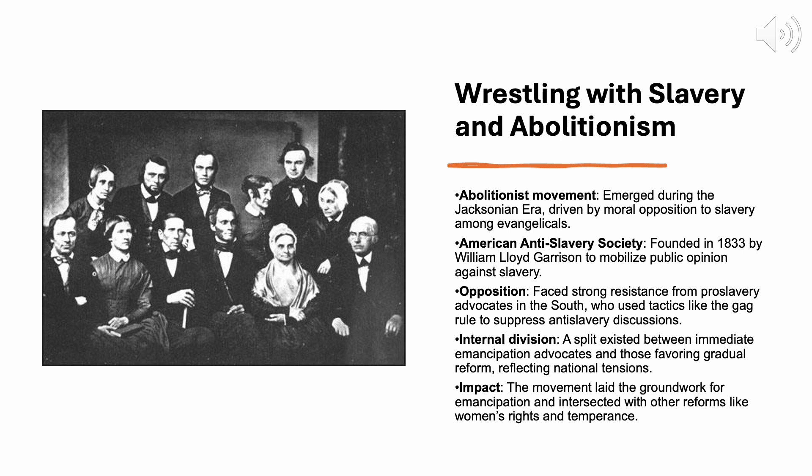The abolitionist movement also faced challenges from within. While some abolitionists, like Garrison, called for immediate emancipation and uncompromising moral reform, others favored a more gradual approach or sought to address the issue of slavery through political compromise. This division within the movement mirrored the broader sectional divide in the United States as the nation grappled with the future of slavery. Despite these challenges, the abolitionist movement made significant strides during the Jacksonian era, laying the foundation for the eventual emancipation of enslaved people during the Civil War. The movement also intersected with other reform movements of the time, including the women's rights movement and the temperance movement.